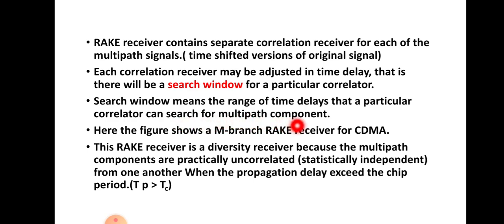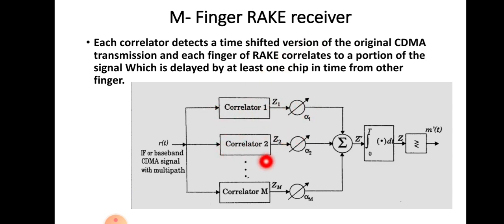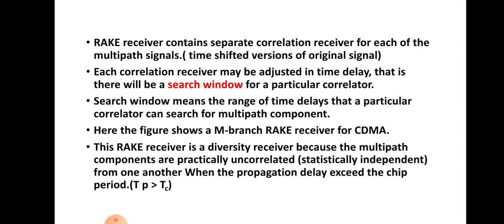The figure shows an M-branch rake receiver for CDMA. You can see the first branch, second branch, third branch, and so on up to M branches with correlators. This is called an M-branch rake receiver since it has M branches. It is also called an M-finger rake receiver, similar to the fingers of a rake. The rake receiver is a diversity receiver because the multipath components are practically uncorrelated from one another when the propagation delay exceeds the chip period.